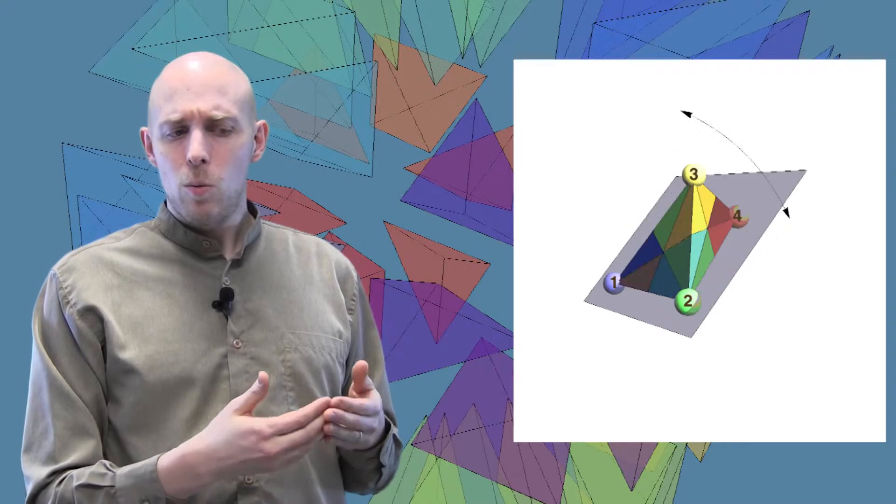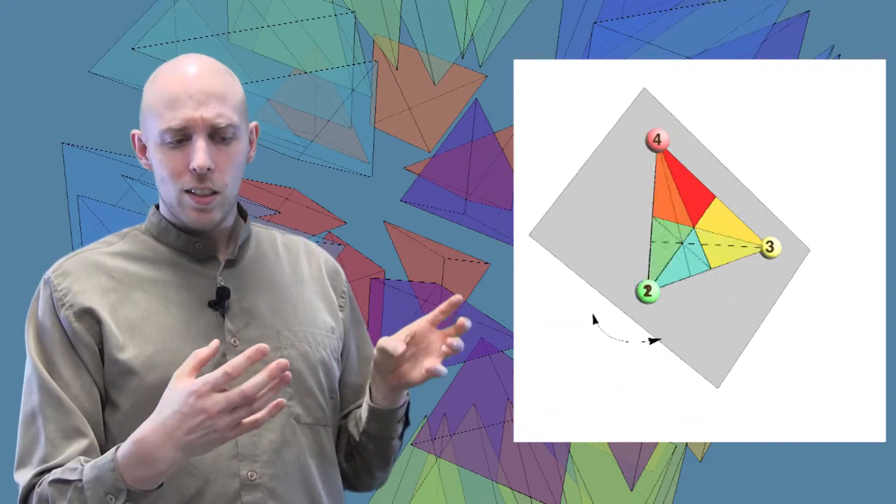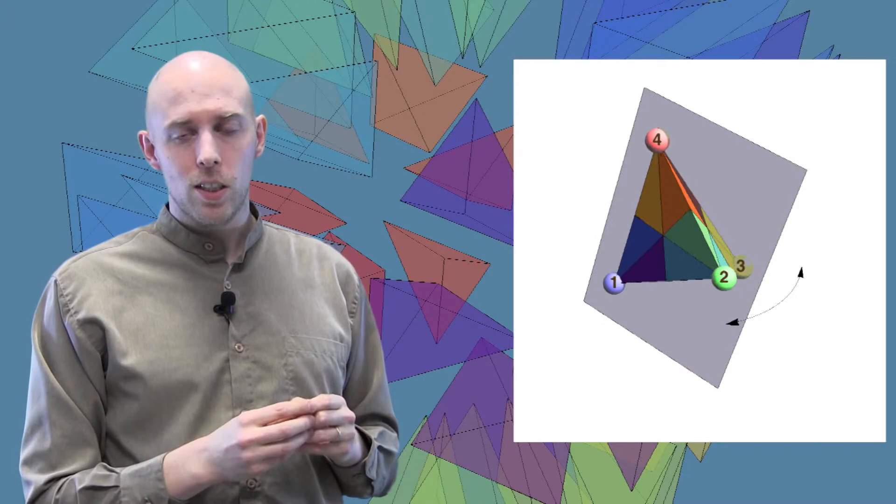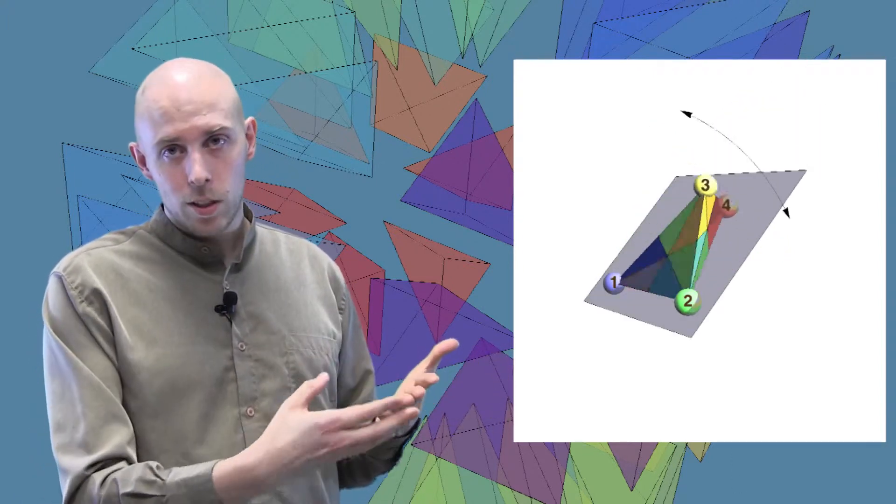And so if you think about it, what that means is what we're doing with a reflection is doing a transposition of two of the vertices, so two of the numbers on the vertices. So if we look at the group of reflections of the tetrahedron, that corresponds to the group of permutations of the numbers one, two, three, four, which is pretty cool.